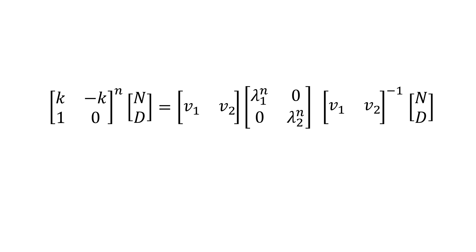So we say that the linear transformation represented by the matrix k minus k, 1, 0 to the n is equal to the transformation represented by the product of the three matrices on the right that projects onto the eigenvectors, scales those eigenvectors by λ to the n, and projects back into the original basis.